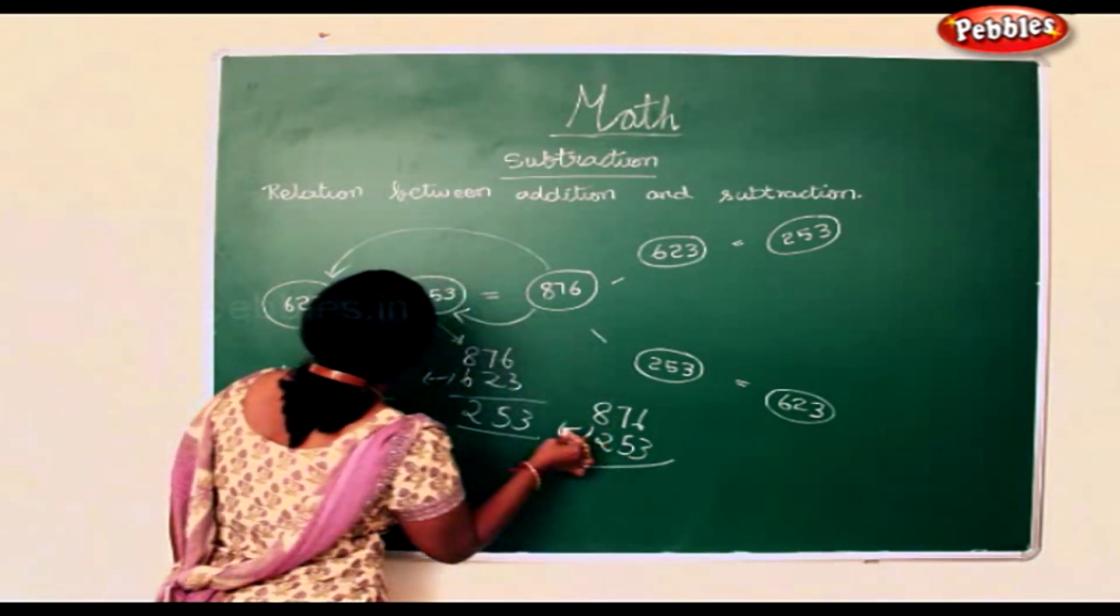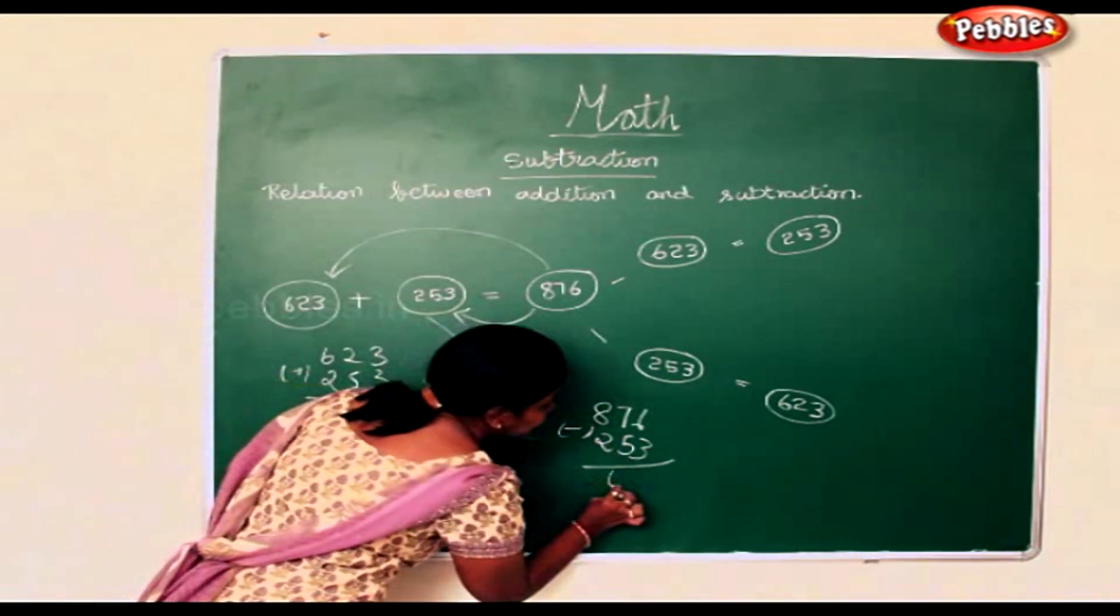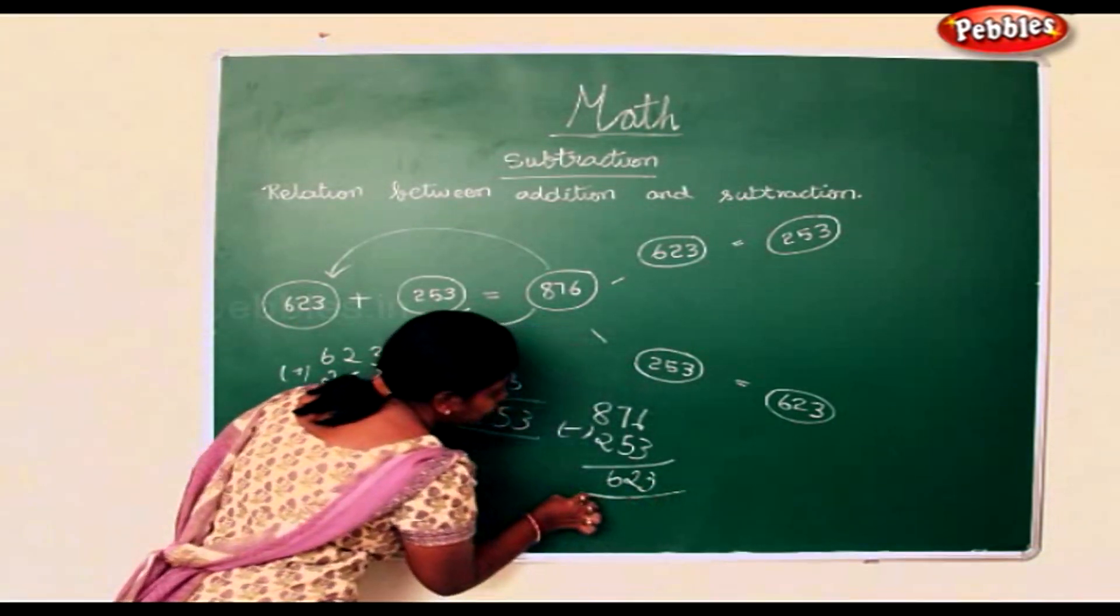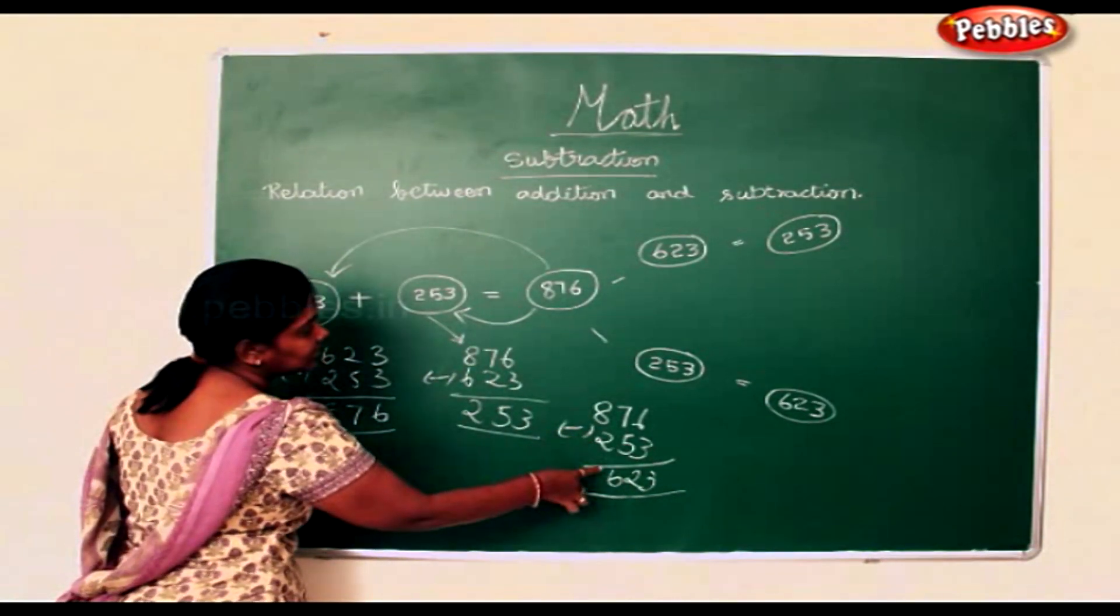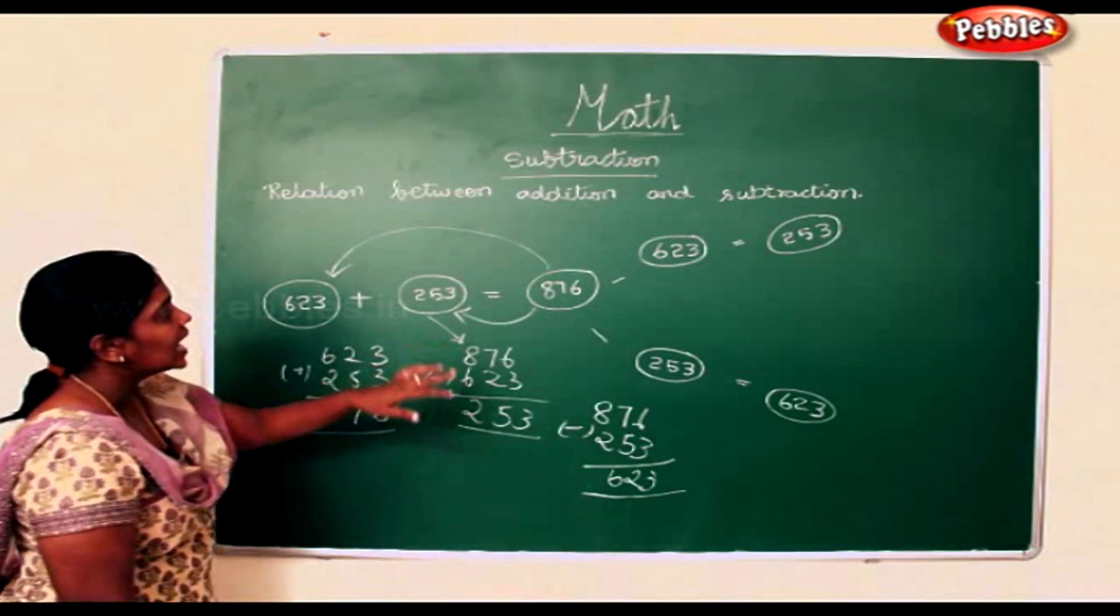If you subtract this, you will get 623 as the answer. So, every addition has a subtraction.